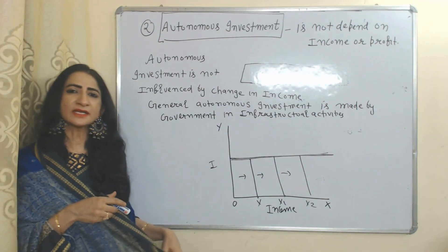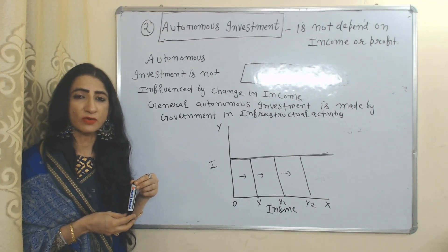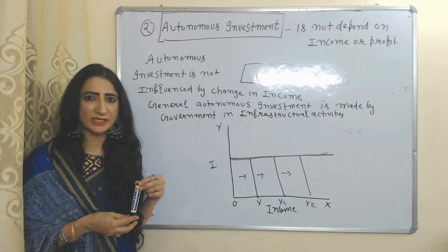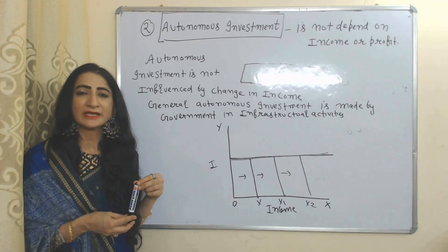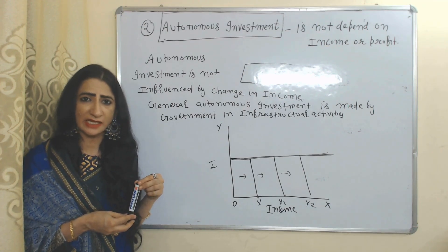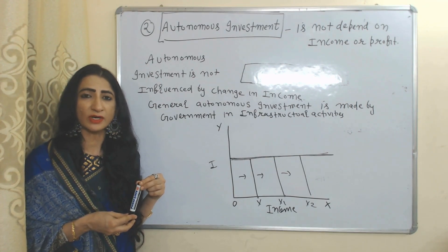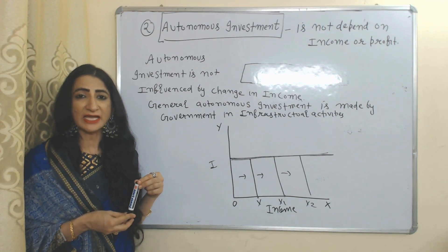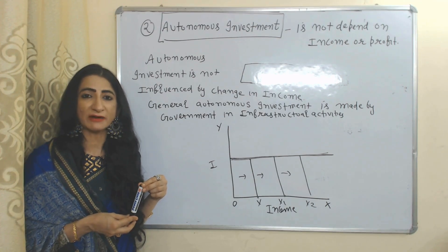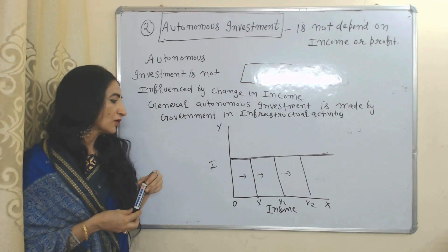Next is autonomous investment. Autonomous investment does not depend on income — it is not influenced by changes in income. Autonomous investment is mainly made by the government on infrastructural activities, because the government invests for the welfare of society, not for making a profit.